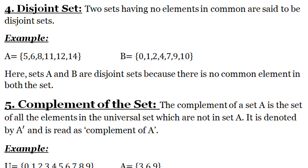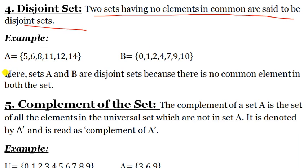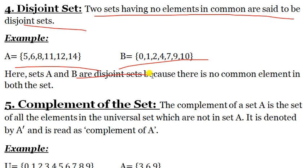Disjoint set is very simple. Two sets having no element in common are called disjoint sets. For example, if set A and set B are given and you cannot find even a single element common between A and B, then A and B are disjoint sets. There is no common element, that's why they are disjoint sets.